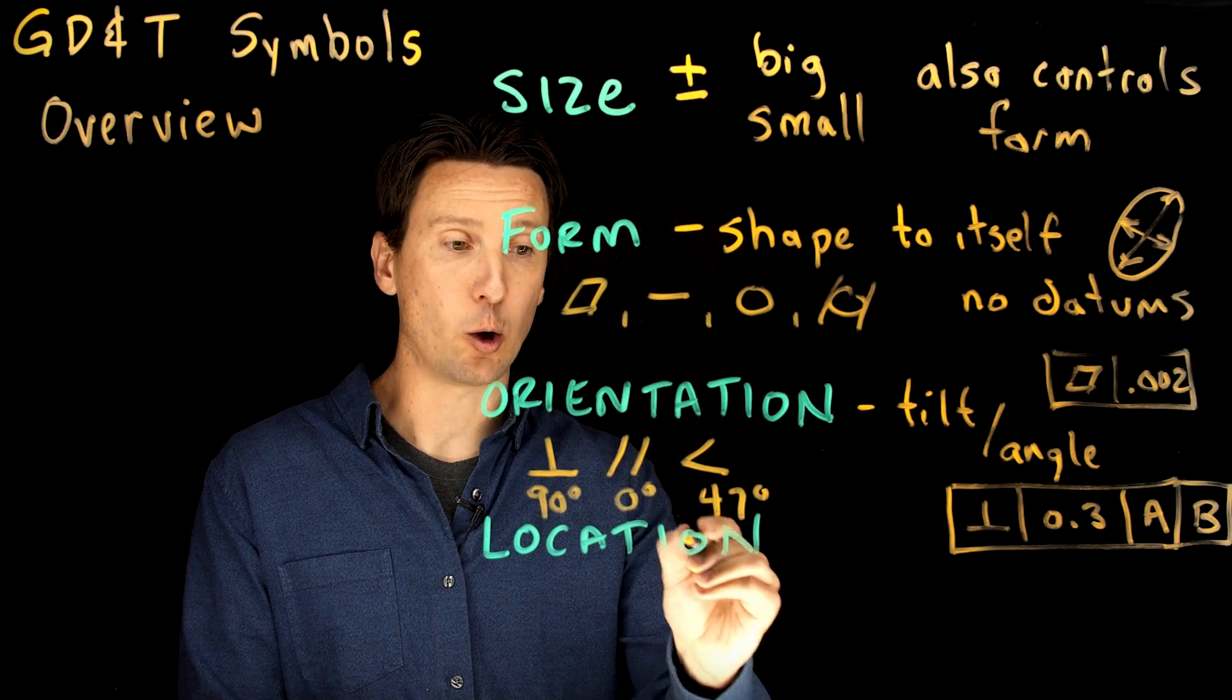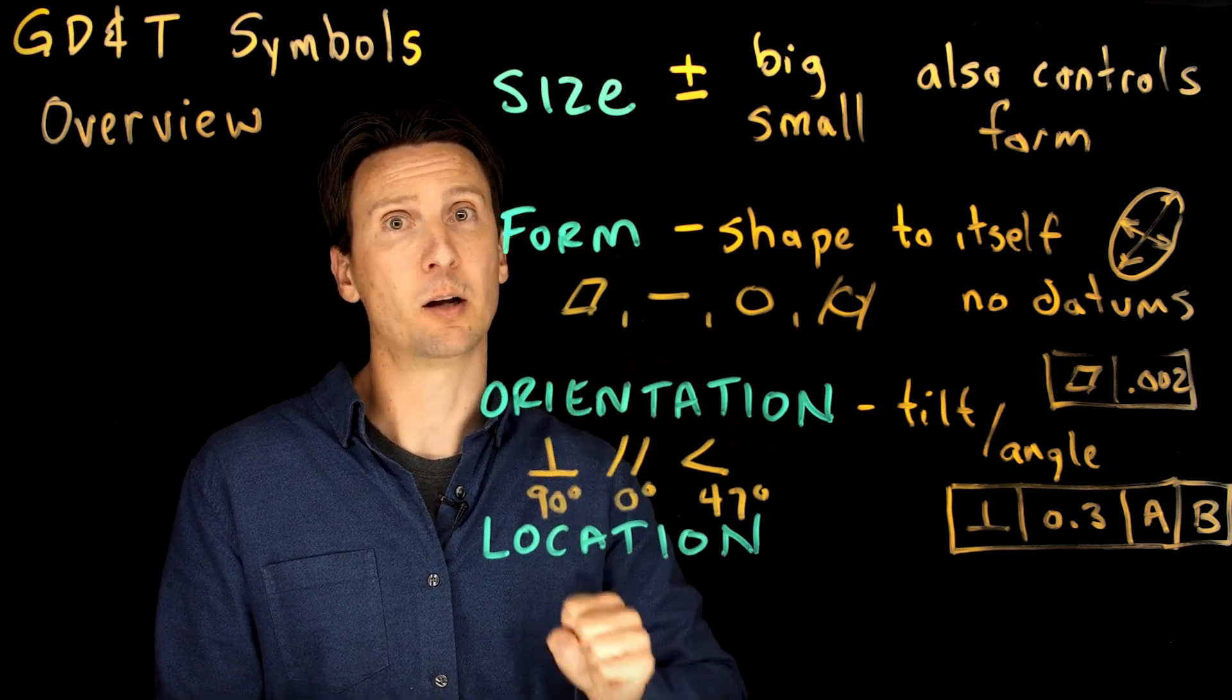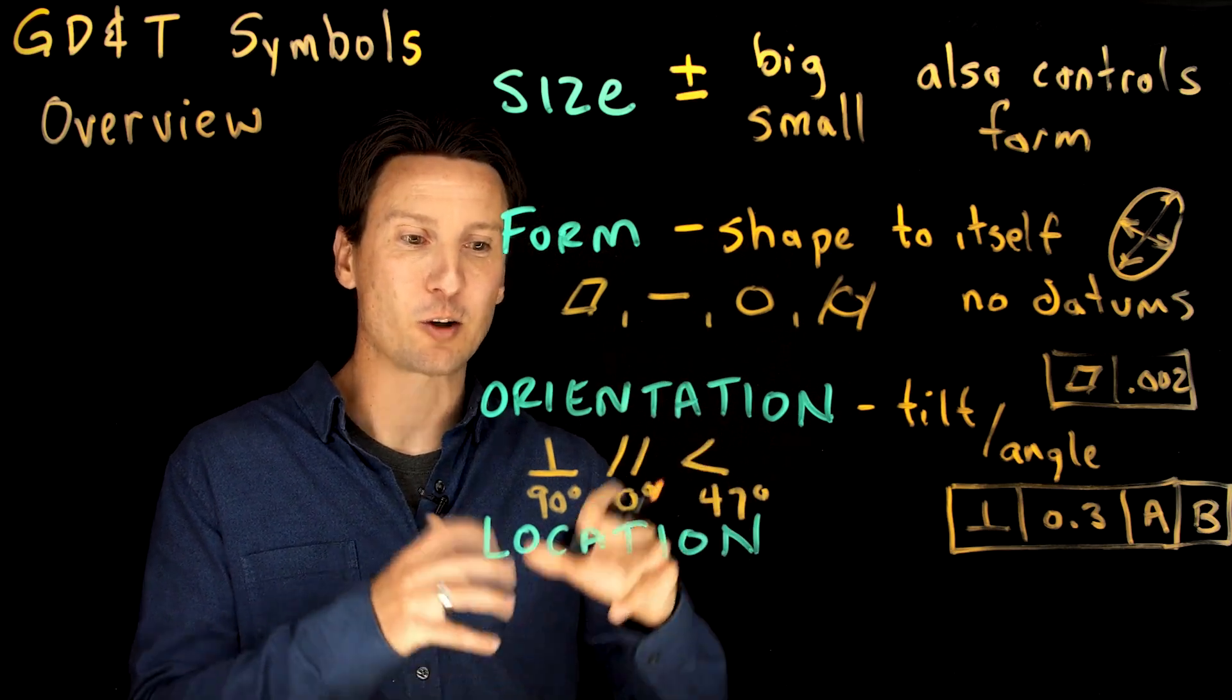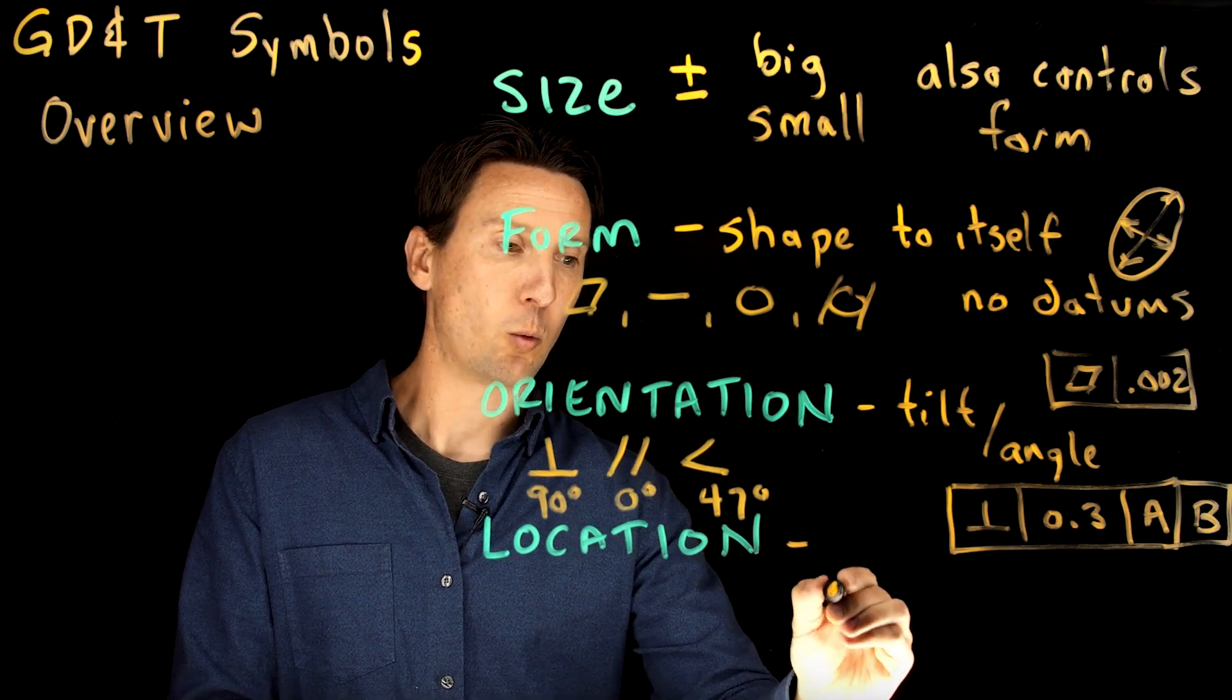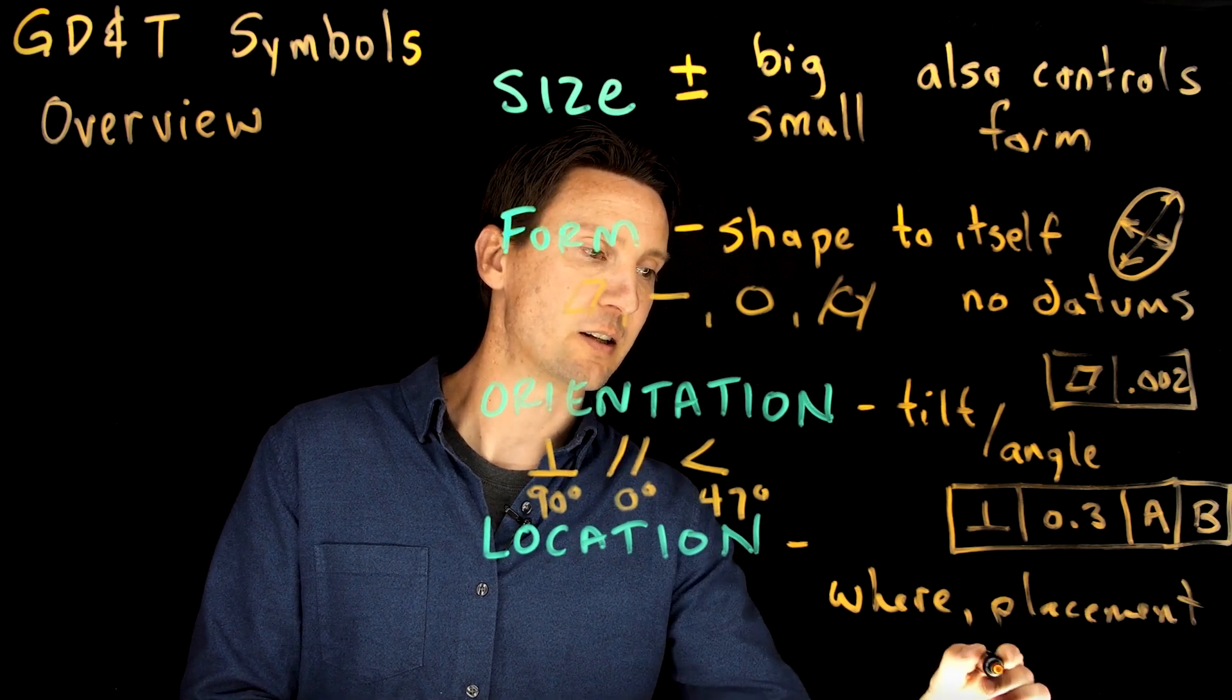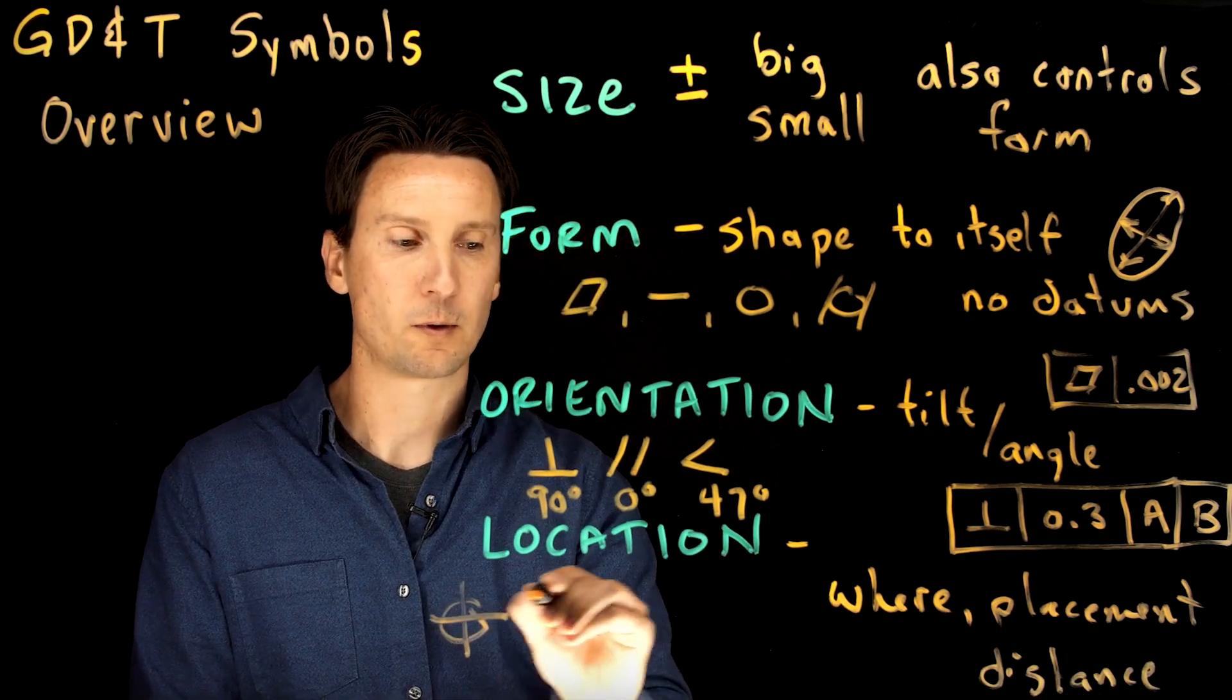This brings us to the last category: location. Location is actually the most important. They actually say that the three most important things in tolerancing are location, location, location. I think that's real estate, but it definitely applies to geometric tolerancing. It's all about locating those features on your part. You want to control where it is on your part, its placement, its distance relative to something else. That's where we use our two big symbols: position and profile.